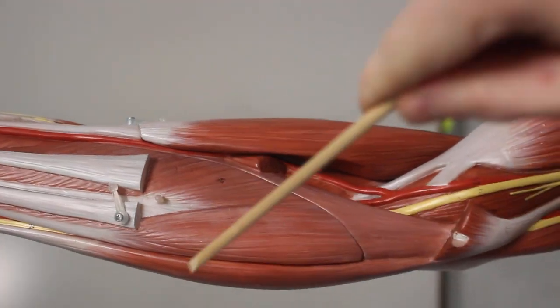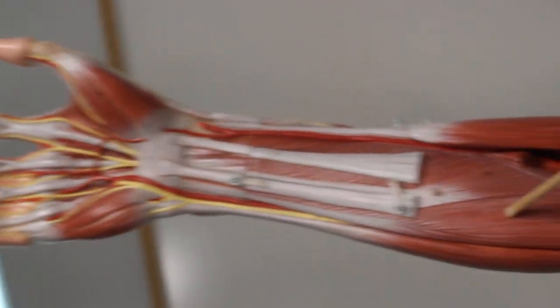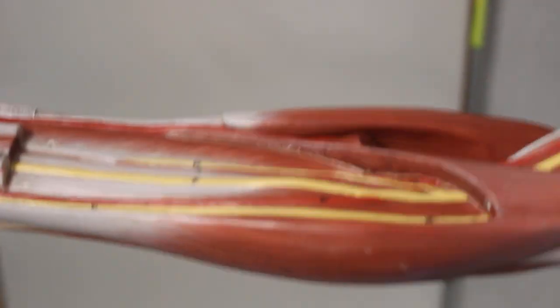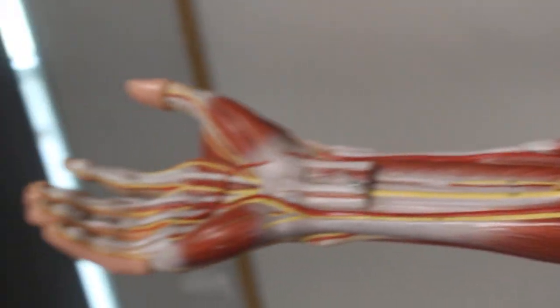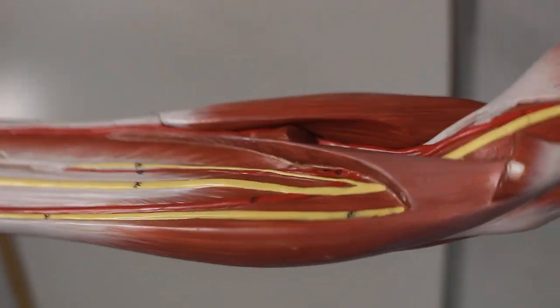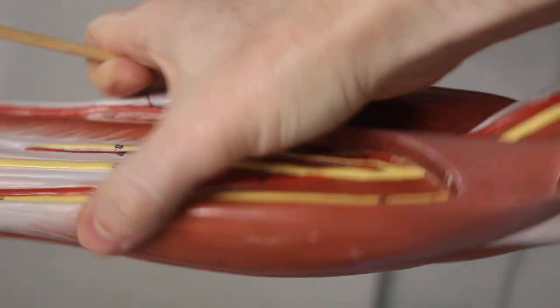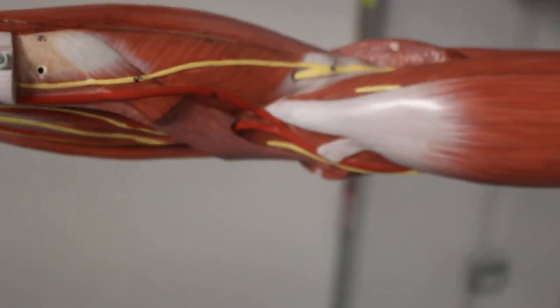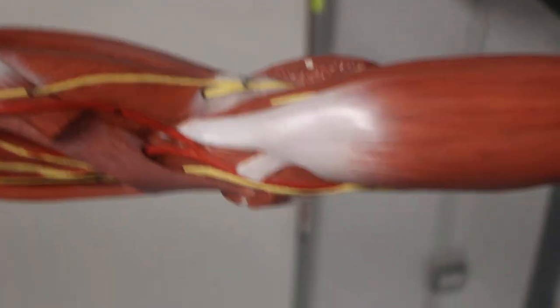If we take these muscles off, we have underneath here flexor digitorum superficialis, going toward the fingers, and we remove this layer, we have underneath that flexor digitorum profundus, still going toward the fingers. If we take this off real quick, right here, this muscle here is supinator. You can guess what it does.